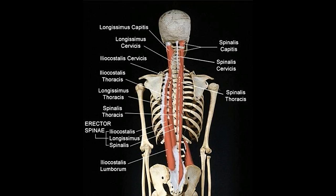Spinalis muscles: the function of the spinalis muscle is to extend the vertebral column and laterally bend the neck and trunk. Spinalis thoracis: this muscle arises from the spinous processes of the lower thoracic vertebrae T11, or lumbar vertebrae L2–L3. It inserts into the spinous processes of the 3rd to 8th thoracic vertebrae. Its function is extension of the vertebral column, maintaining erect posture, and helping in bending and twisting to the same side.